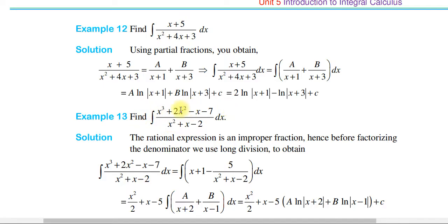If the rational expression is an improper fraction — that is, the degree of the numerator is greater than or equal to the degree of the denominator — then before factorizing the denominator, we use long division.